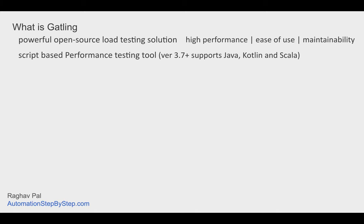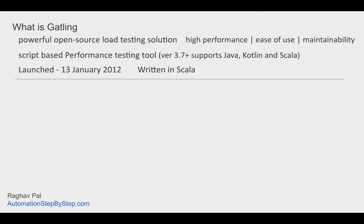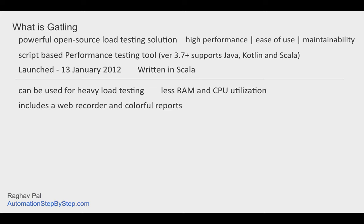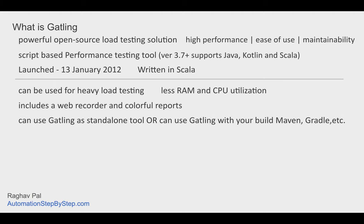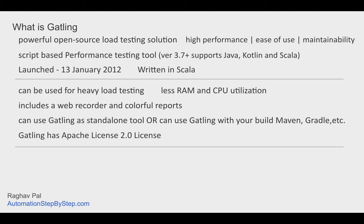Gatling was launched in January 2012 and is written in Scala. It can be used for heavy load testing as it uses very little RAM and CPU. It includes a web recorder and very intuitive colorful reports. There are two ways to use Gatling: as a standalone tool by downloading from the Gatling website, or by creating a project using a build tool like Maven, Gradle, or SBT.